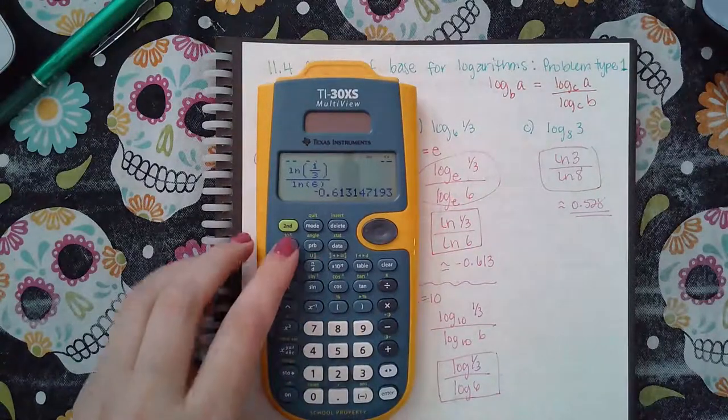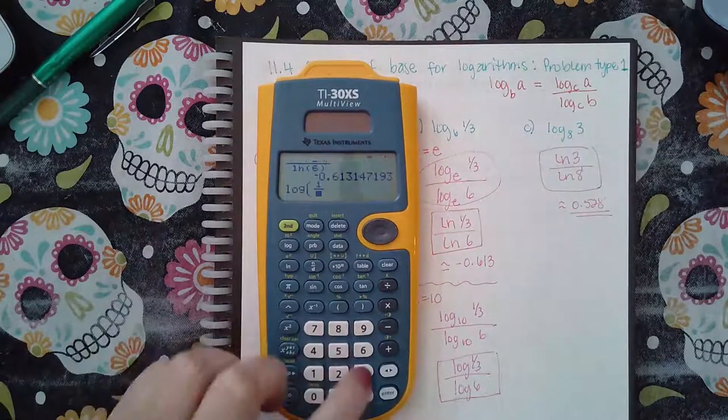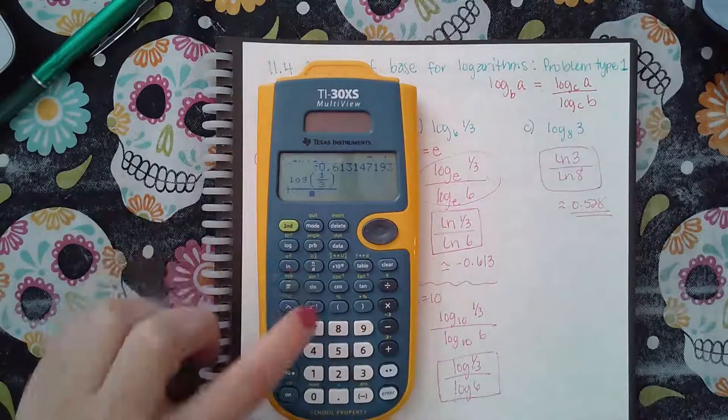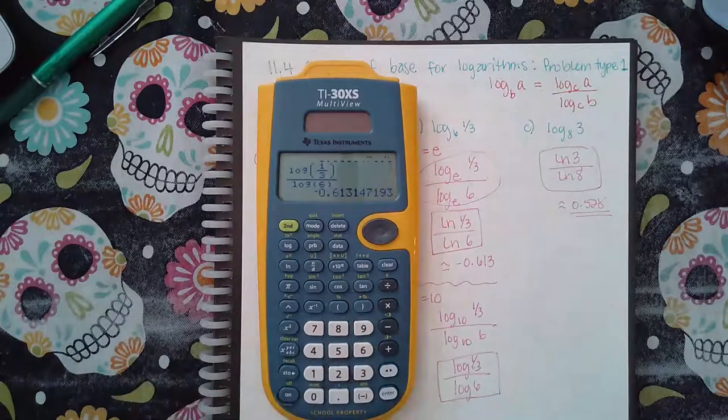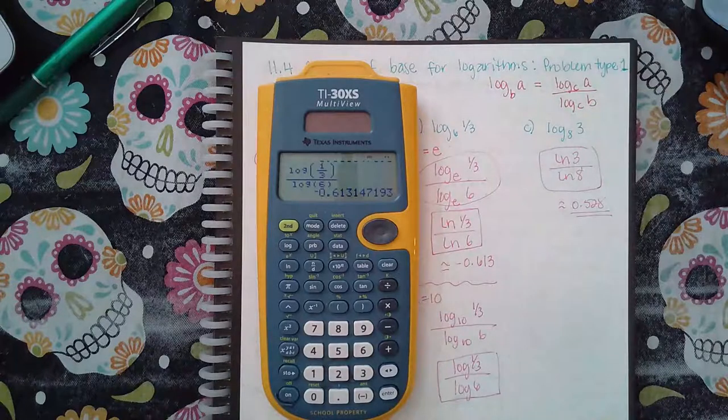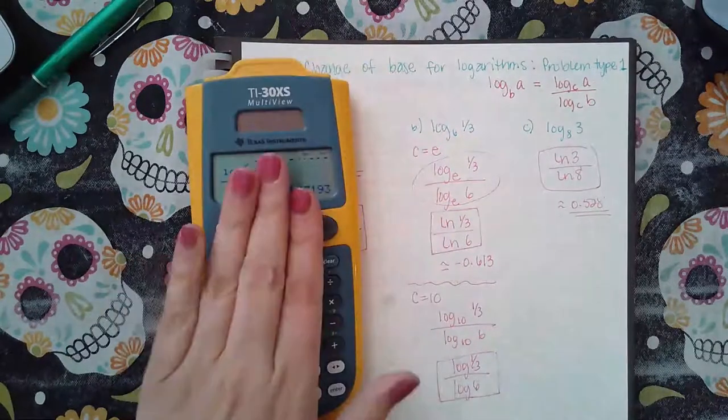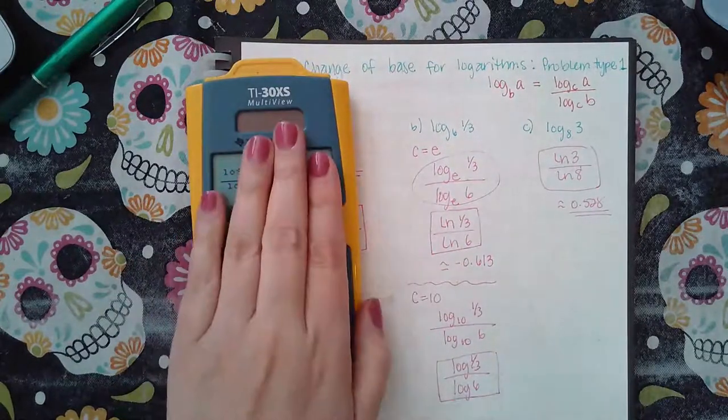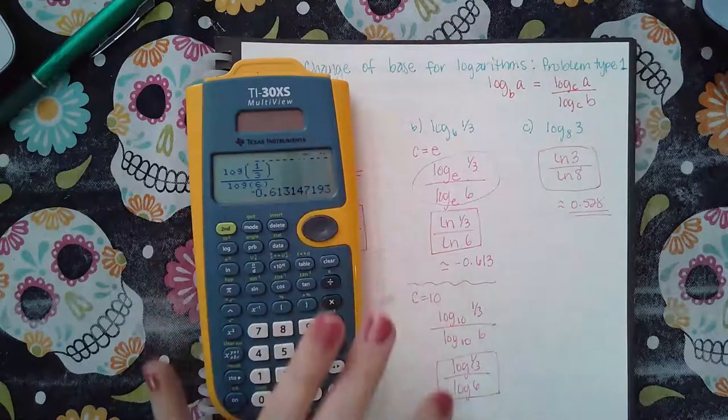Then over here I changed it to the base 10, so I have log of one third over log of six, and notice that it's the exact same number.